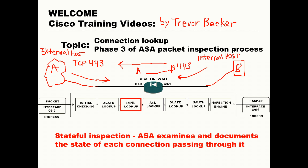Phase three of the ASA packet inspection process is connection lookup. The ASA firewall is a stateful packet inspecting device, meaning it's going to examine and document the state of each connection that is attempting to pass through it. Whenever a connection is allowed through the firewall, it's going to create a flow or a connection entry in its connection table.